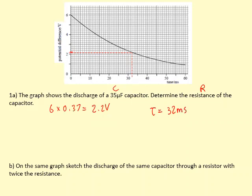Okay, and so we can use the fact that that's equal to RC. So 32 times 10 to the power of minus 3 equals R, which we don't know, times C. This gives us an R of 914 ohms.